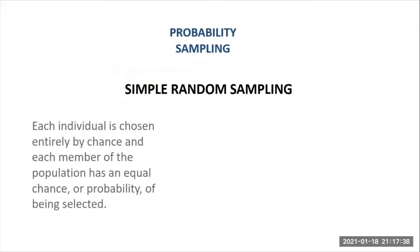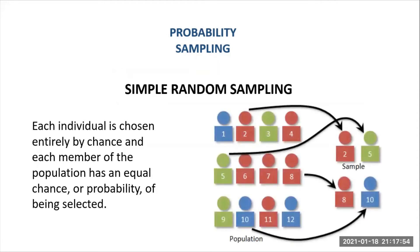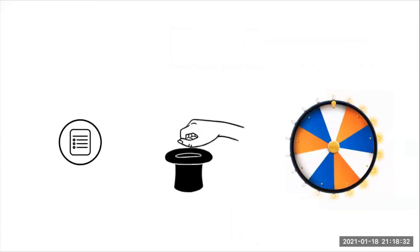For simple random sampling, each individual is chosen entirely by chance, and each member of the population has an equal chance or probability of being selected. One way of obtaining a random sample is to give each individual in a population a number and then use a table of random numbers to decide which individuals to include. For example, if you have a sampling frame of 12 individuals labeled 1 to 12, you may use a random number table to pick your sample. If the first four numbers were 2, 5, 8, and 10, you would select those individuals. There are many ways to randomize — by master list, by draw, by lots, or spinning a wheel.